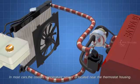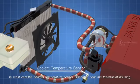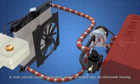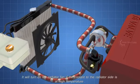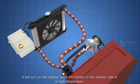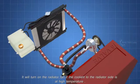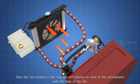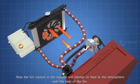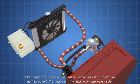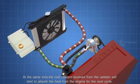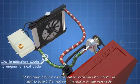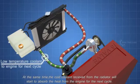In most cars, the coolant temperature sensor is located near the thermostat housing. It will turn on the radiator fan if the coolant to the radiator side is at high temperature. Now, the hot coolant in the radiator will release its heat to the atmosphere with the help of the fan. At the same time, the cold coolant received from the radiator will start to absorb the heat from the engine for the next cycle.